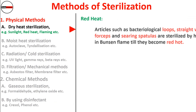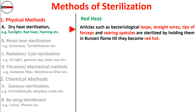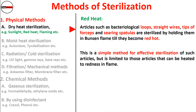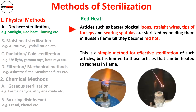Red heat: articles such as bacteriological loops, straight wires, tips of forceps, and spreader spatulas are sterilized by holding them in a Bunsen flame until they become red hot. This is a simple and effective method of sterilization, but it is limited to those articles that can be heated to redness in a flame. You can see in the picture how the forceps or nichrome wire loop is held above the Bunsen burner and sterilized until it turns red.